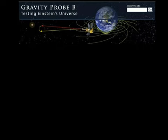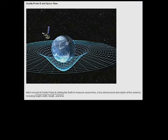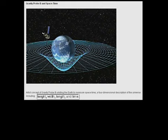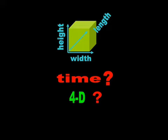Indeed, the NASA Gravity Probe B site does not justify the four dimensions of space-time with coordinates as Hawking does, but with the three dimensions of physics — height, width, and length — and a number line known as time. So the questions for the mathematicians are: does a cube become four-dimensional because we factor in time? Do you have trouble imagining a cube when your clock ticks? How does time alter the shape or dimensionality of a cube?